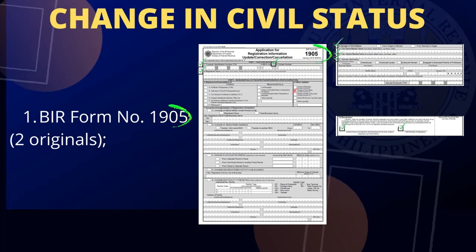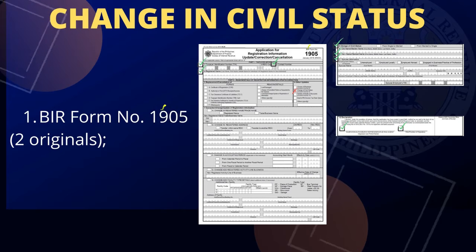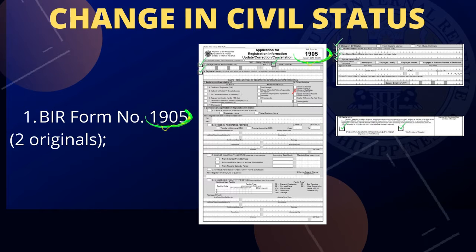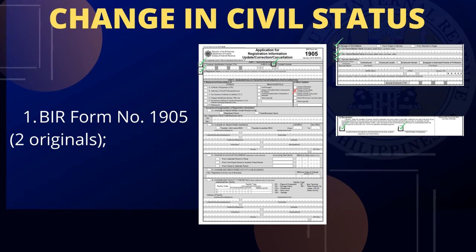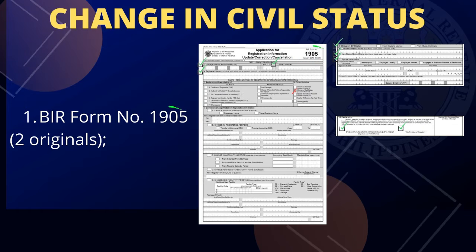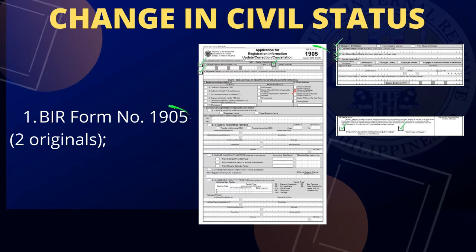Change in civil status: one, BIR Form Number 1905, two originals. The mandatory fields are the following: taxpayer identification number, contact number, registered name, other updates — change of civil status, old name or maiden name, new name or married name, spouse information, signature over printed name on taxpayer or authorized representative, tax agent.